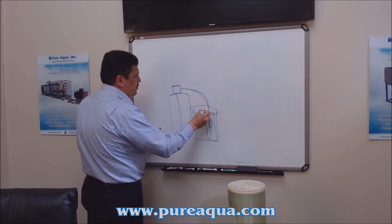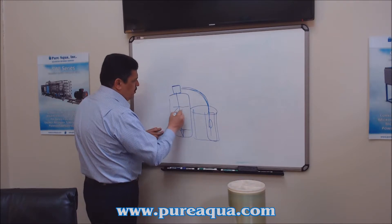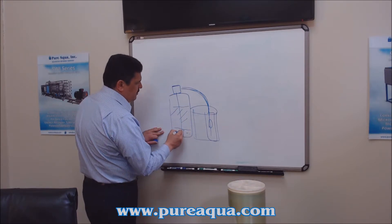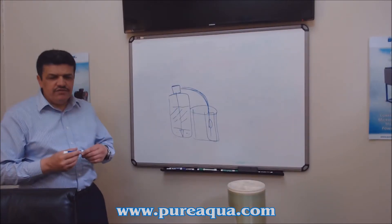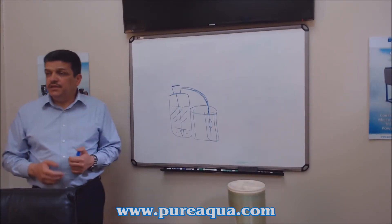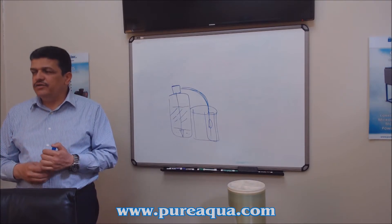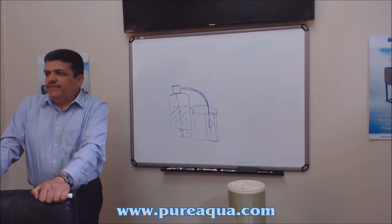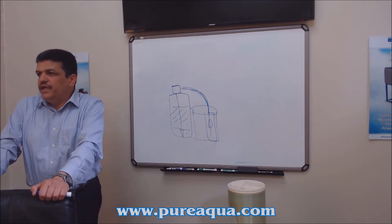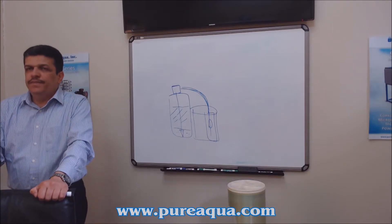You have the resin here, this is all resin, and then you have gravel here. That's the ion exchange resin. Usually for the water softener it has a 30,000 grains exchange capacity. In California water, here in Southern California, the average is between seven to ten grains hardness.